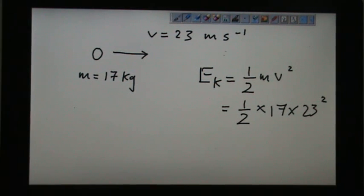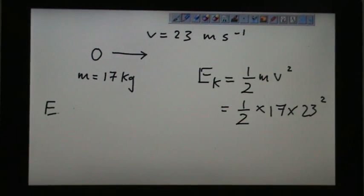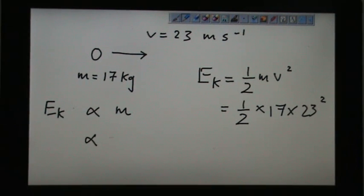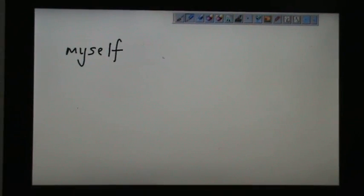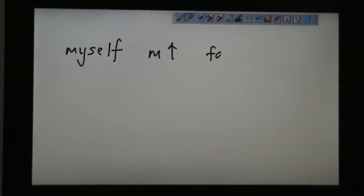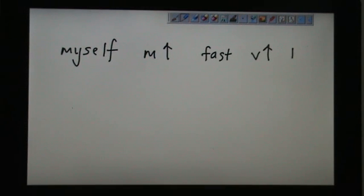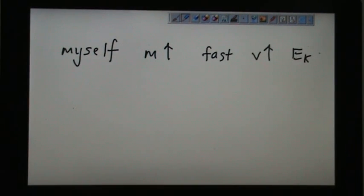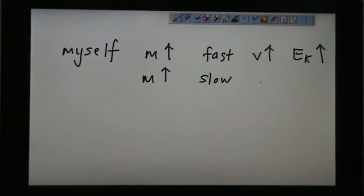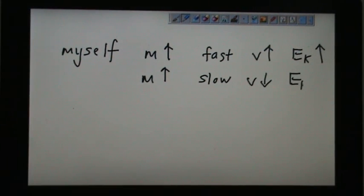So this kinetic energy tells us that it depends on the mass and it depends on the speed. I will give you more example. If myself, a heavy person, the mass is very high, and I run fast, my V is very high. So based on calculation, my kinetic energy is very high. My mass is still very high, but I go slow, so the kinetic energy will be lower.